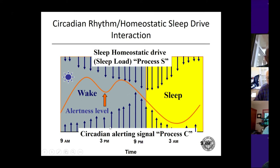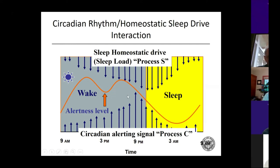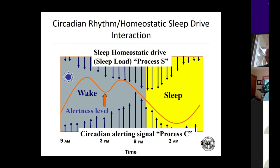When it gets dark out, the retinohypothalamic tract no longer stimulates the suprachiasmatic nucleus. During the day, the SCN had been inhibiting the pineal gland from secreting melatonin. When that inhibition is released, melatonin is secreted, which further inhibits the circadian alerting signal, and you're able to fall asleep fairly quickly. This is why it's important to sleep when it's dark and be awake when it's light — and why it's such a struggle when we try to do it the other way around.